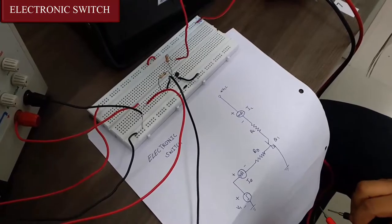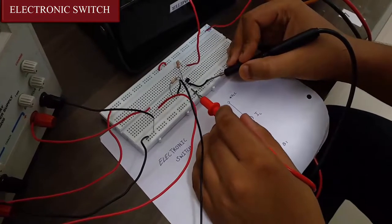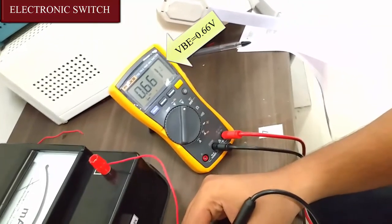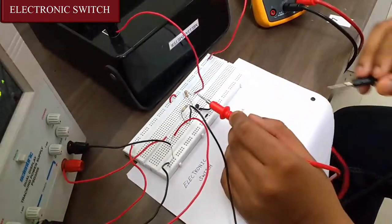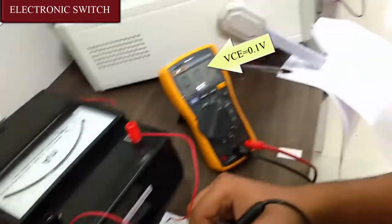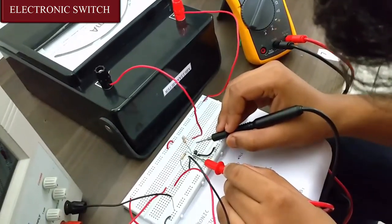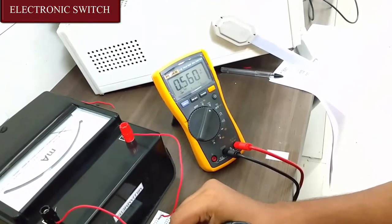So now we are going to check the voltages. First we are going to check VBE. So we are getting a reading of 0.66 volts. Now for VCE we get a value of 0.1 volts. And for VBC we get a value of 0.56 volts.